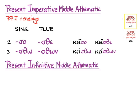And then for the infinitive middle, athematic, we'll get that ending σθαι that we know, and the long grade again because we're not subjunctive or optative, and we get κεῖσθαι.